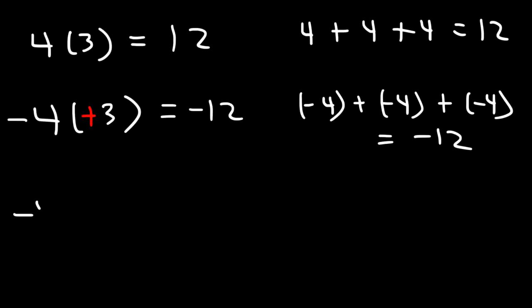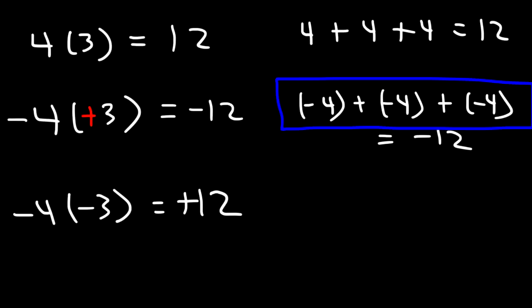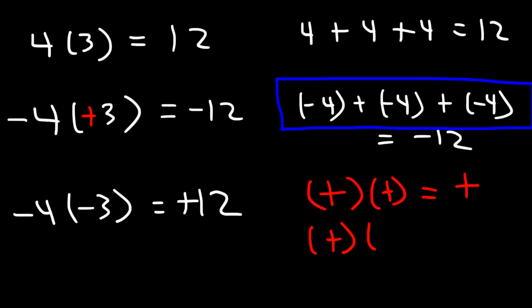But what about negative 4 times negative 3? A negative times a negative is a positive. A positive times a positive gives a positive; a positive times a negative gives a negative; but a negative times a negative gives a positive. Disclaimer: you really don't need to know why. If you simply know that a negative times a negative equals a positive, you can pass all of your math classes.